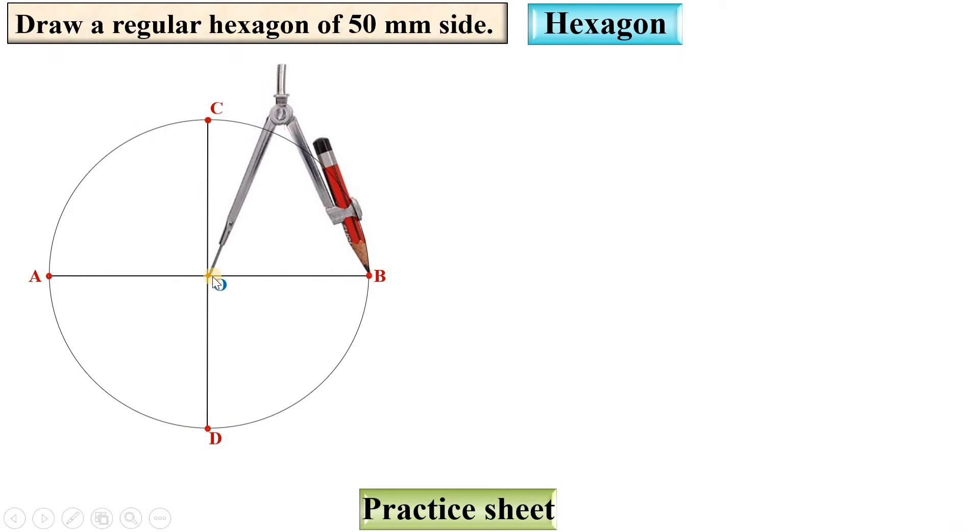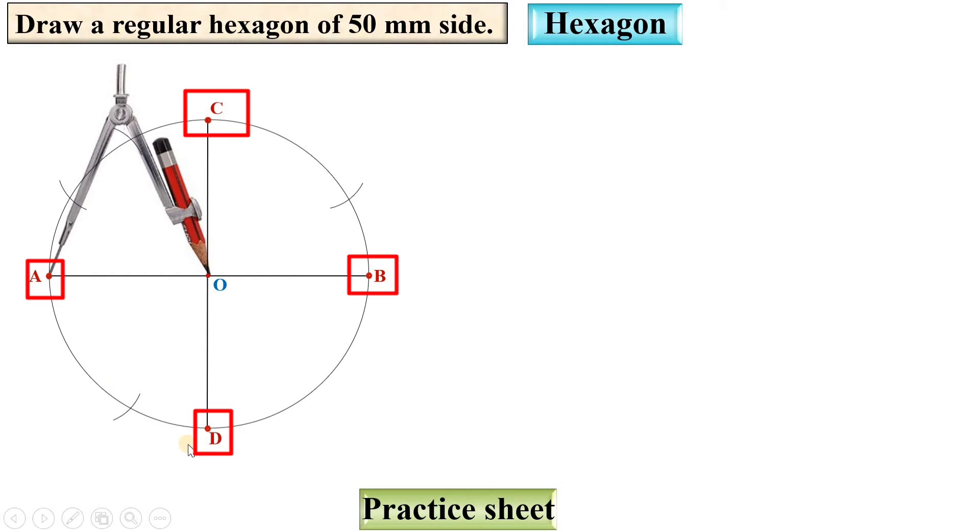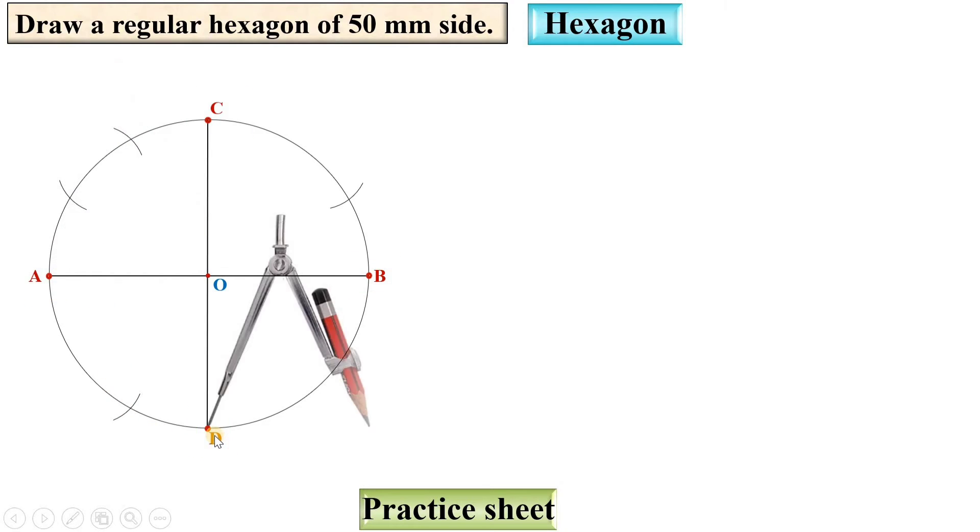Once again, take the compass and set the radius as OB or exactly equal to the side of the hexagon, 50 mm. One by one you have to take all four centers and draw the arc on both sides. Here you can see with the same radius, A as the center, draw the arc on the circle. Next, D as the center with the same radius, draw the arc on the circle.